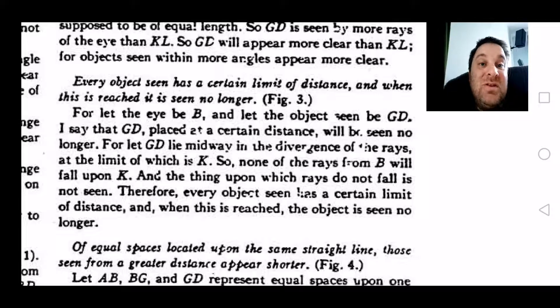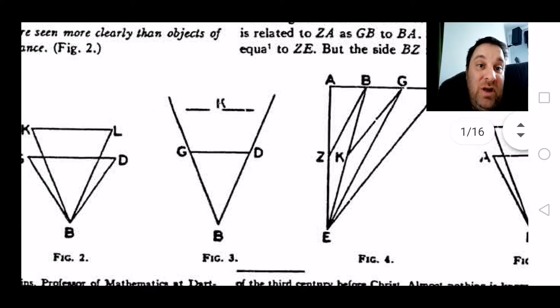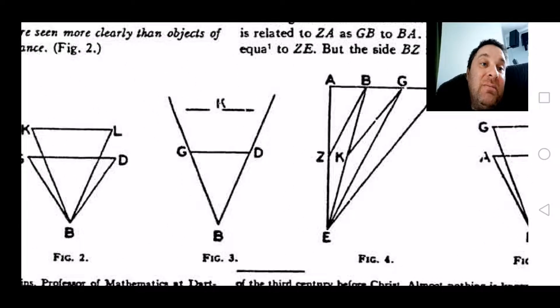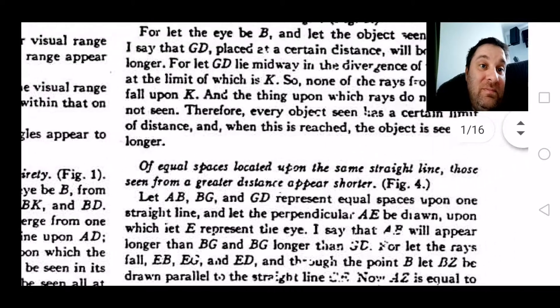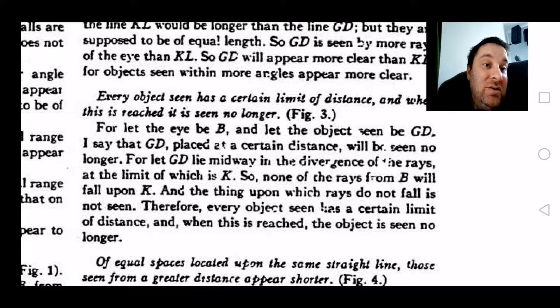For let the eye be B, and let the object seen be GD. So we're going to have a quick look at the diagram, figure three. So the eye is B and the object seen is GD.